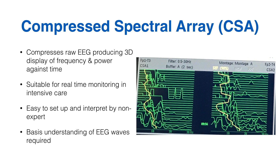On a single CSA screen, you can have many hours of raw EEG data compressed into one picture, allowing continuous monitoring without the pages and pages of data you'd have with a standard EEG. This makes it really suitable to the intensive care environment where it can be left on the patient continuously. It's also much easier to set up and interpret by non-experts, though it does require some basic knowledge of EEG waves, which I'll cover now.